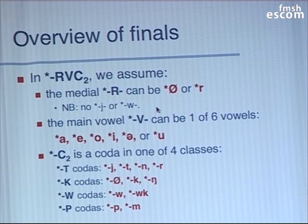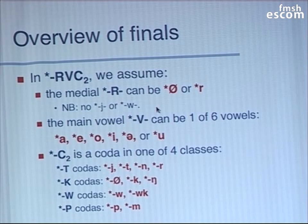K — for our purposes, we can include 0 as K, although it often behaves a little differently, and that's K and Ng. W is a little peculiar. We only have W in this WK, whose status is still not quite clear, but we have to assume it at this point. And then the P codas are the labial codas.